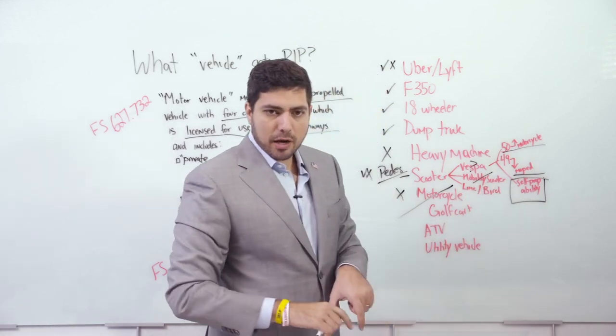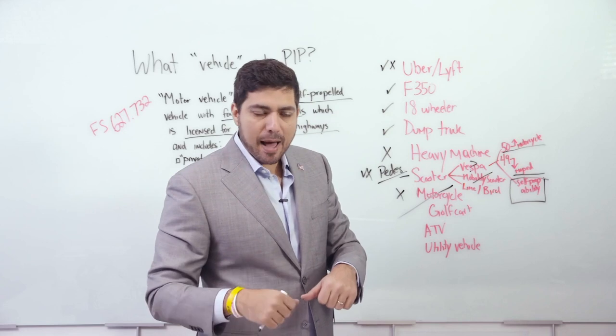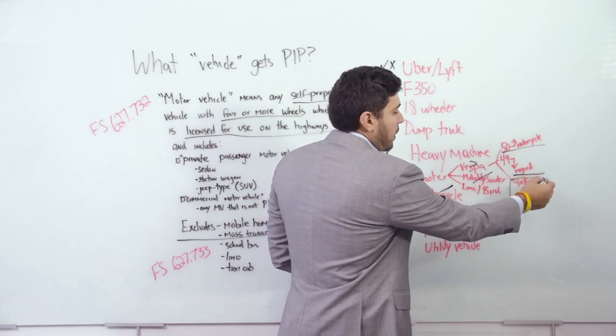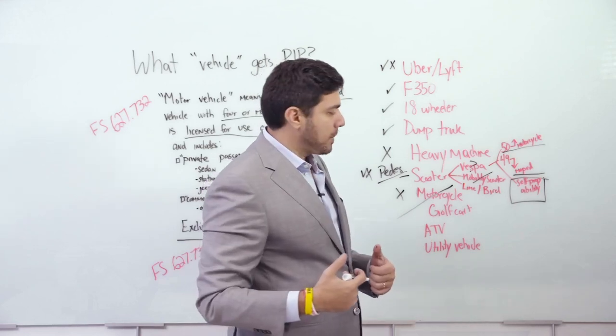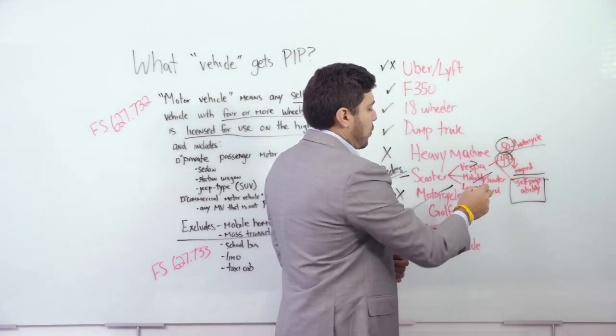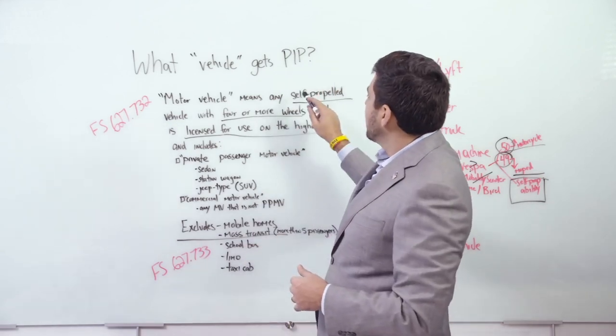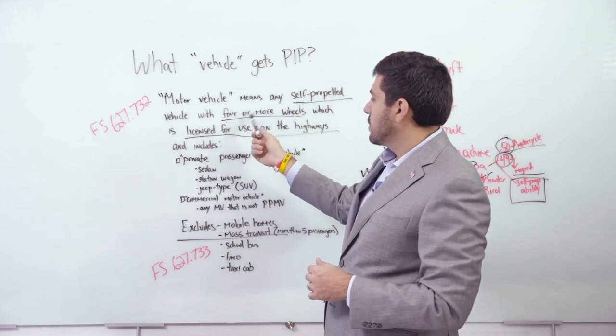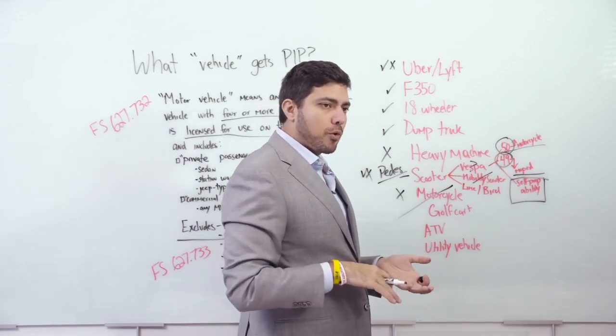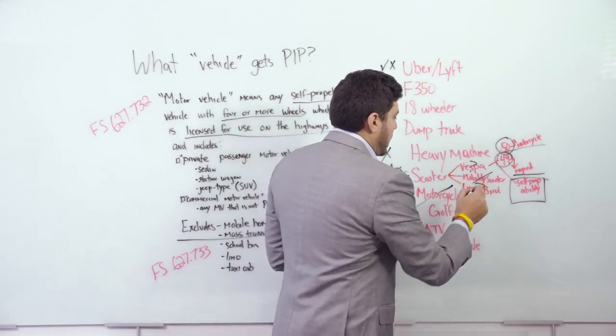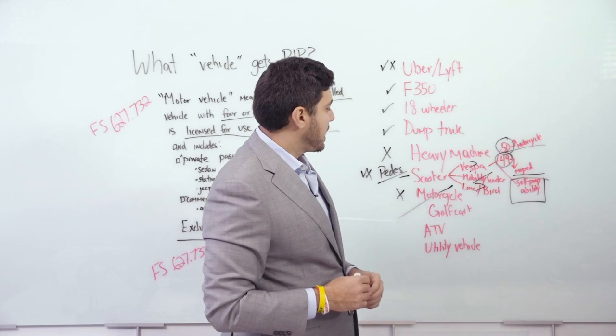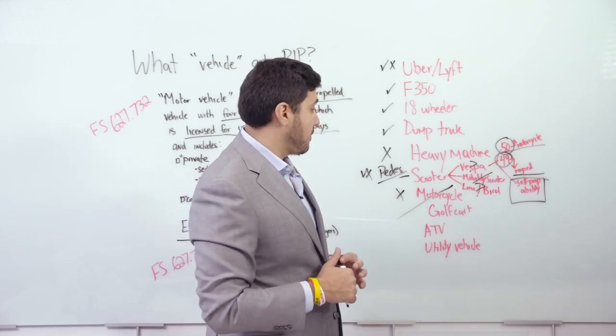If it's 49 CCs or lower, you have to ask, does it have the ability to be manually propelled with your feet? So if it's a Vespa, I'm not talking about the brand, I'm talking about that type of a scooter, nobody's going to propel that with their feet. Now mobility scooter, that is also a no, there's no PIP. It's not licensed for use on Florida highways. The Lime and Bird scooters, it's just like a board with a stick and a handle and you can rent it on an app. Could you propel it manually with your feet? Maybe. I don't think anyone would and they don't have motors so I don't think there's PIP on this.